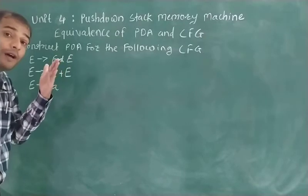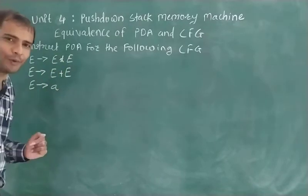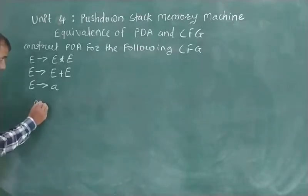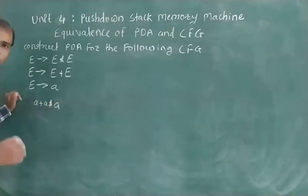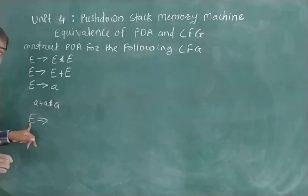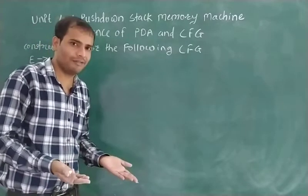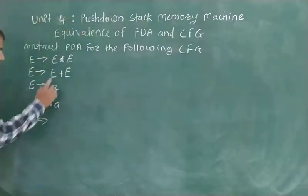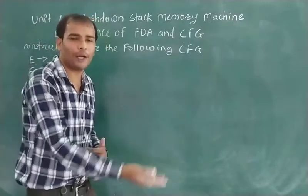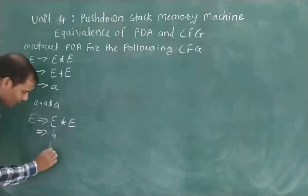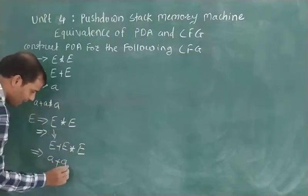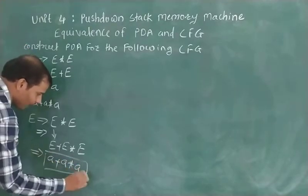You just need to recall the concept of the derivation process. If you want to derive the string a plus a star a, you start from the starting symbol E. You replace E with E star E, then replace the first E with E plus E, giving E plus E star E. Then each E gets replaced with a, deriving the final string a plus a star a.